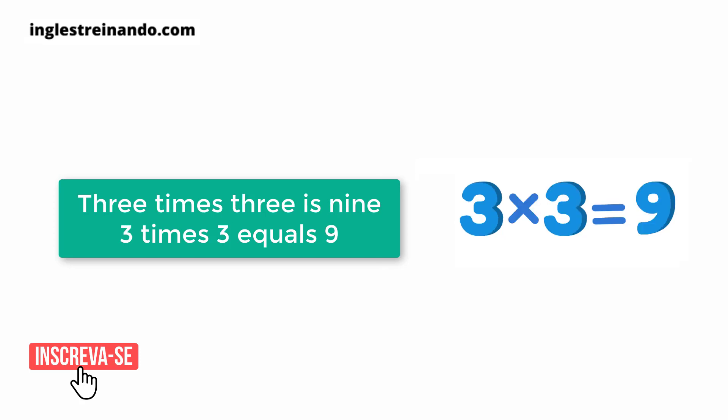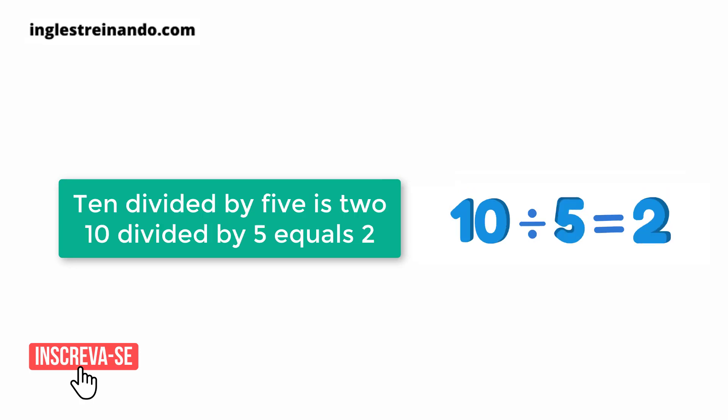3 times 3 is 9. 3 times 3 equals 9. 10 divided by 5 is 2. 10 divided by 5 equals 2.